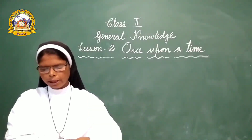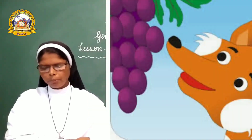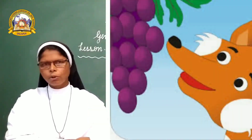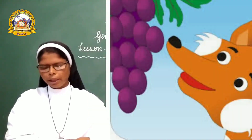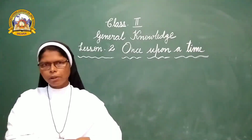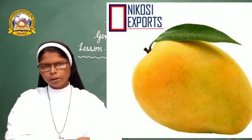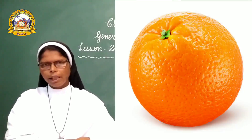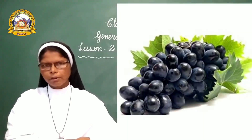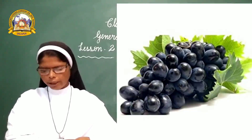Third question: The fox could not reach them and called them sour — mangoes, orange, or grapes? Very good — grapes!